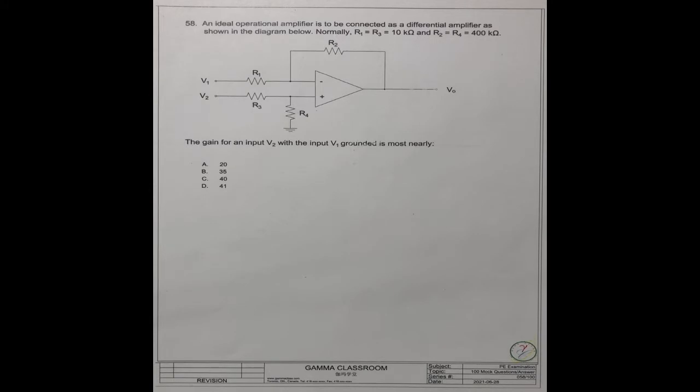Normally, R1 equals R3 equals 10 kΩ, and R2 equals R4 equals 400 kΩ.